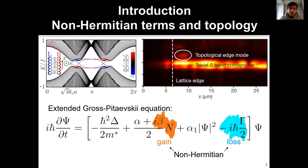This dissipative nature, in the mean-field extended Gross-Pitaevsky equation model, enters through the anti-Hermitian loss term in the evolution operator, which is compensated by the gain term stemming from the excitonic reservoir. Both these terms are anti-Hermitian, making the whole Hamiltonian non-Hermitian, and this is why I am going to refer to the related effects as non-Hermitian effects.